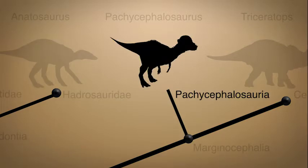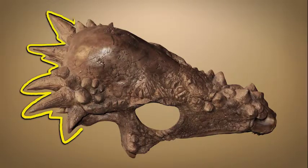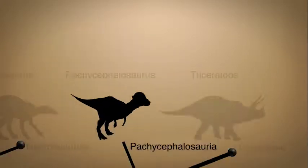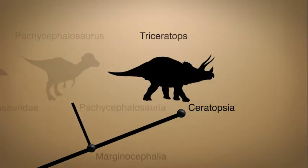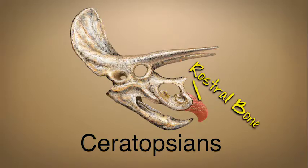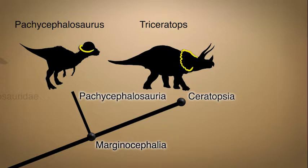Our next group is the Pachycephalosauria. They have a very thick skull and spikes on the back of their head. The last group on our cladogram is the Ceratopsia. Triceratops is the best known representative of this group. Ceratopsians have a beak, called the rostral bone, on the upper jaw. Both Ceratopsia and Pachycephalosauria are grouped together as the Marginocephalia, which are dinosaurs that have a small shelf or a frill of bone over the back of the skull.